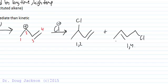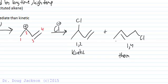So here's the 1,2-product and the 1,4-product. We know that the 1,2-product is the kinetic product, favored at low temperature with a long reaction time, and is the major product under those conditions. For the thermodynamic product, we look at what's more stable — here, this is a disubstituted double bond, so this is the thermodynamic product.